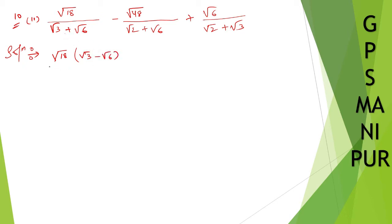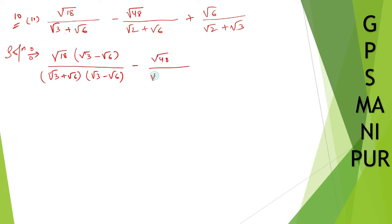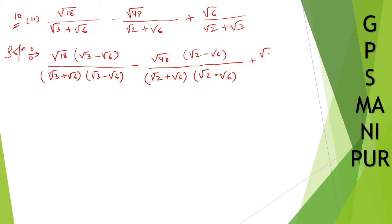If you are multiplying to the numerator, you are going to multiply to the denominator even: root 3 plus root 6 into root 3 minus root 6. Take the same thing for the next term: root over 48 divided by root over 2 plus root over 6 — multiply by root 2 minus root 6 to numerator and denominator. And for root 6 divided by root 2 plus root 3, multiply by root 2 minus root 3.